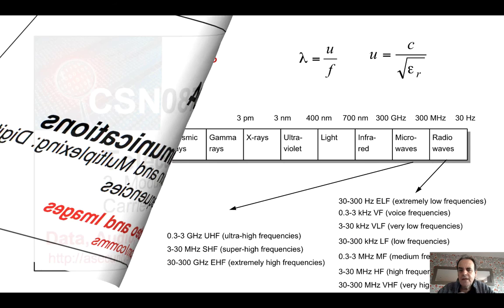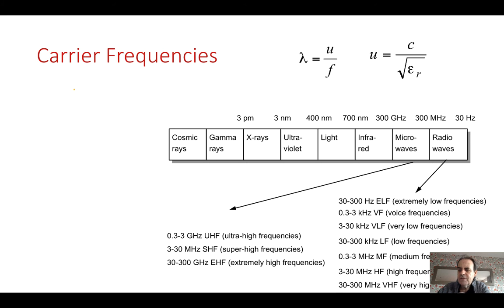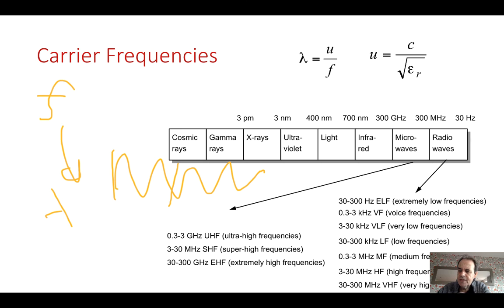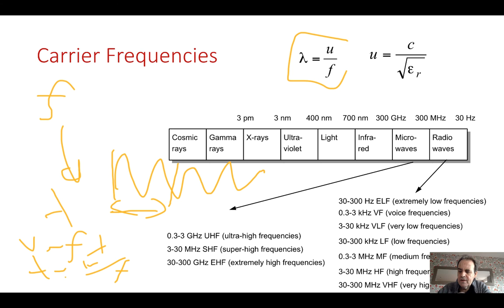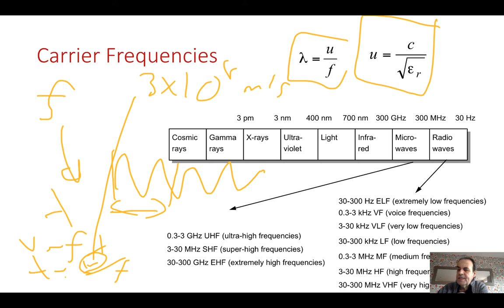Let's look at carrier frequencies. Each carrier frequency has a corresponding wavelength. Frequency is the number of cycles per second, while wavelength is the physical length of the wave as an electrical signal. The relationship is v = f × λ, or λ = v / f. In free space, v = 3 × 10⁸ meters per second. Within a dense medium such as glass, the speed is calculated as c divided by the square root of εᵣ, so the wave slows down.